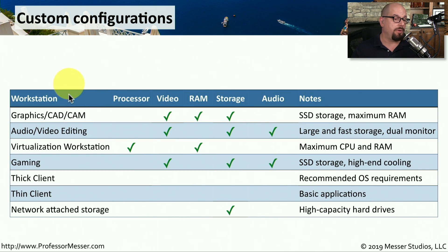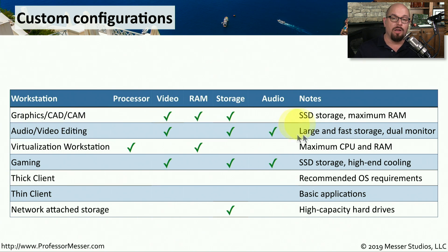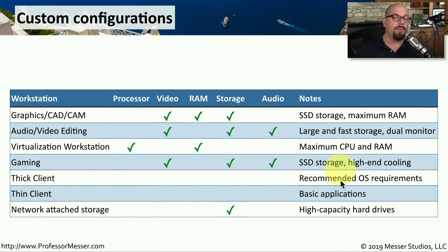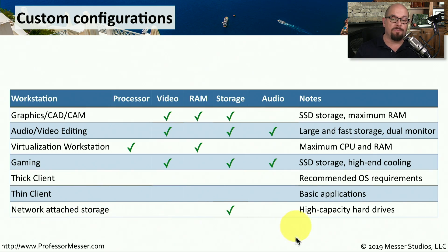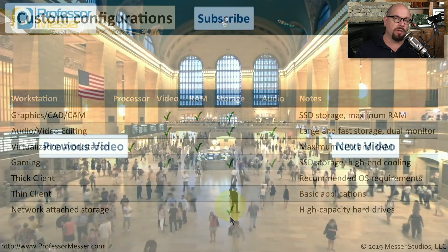Here's a summary of these custom computer systems. A graphics workstation running CAD CAM software needs SSD storage and maximum RAM. An audio-video editing device also needs fast, large storage and dual monitors. A virtualization workstation requires maximum CPU cores and plenty of memory. Gaming devices require fast SSD storage and high-end cooling to support high-end audio and video. Thick clients have the hardware necessary to run the operating system and applications, which is exactly the opposite of the thin client, which only needs to support basic remote desktop functionality. And a NAS device will have plenty of high-capacity hard drives to provide centralized storage on the network.